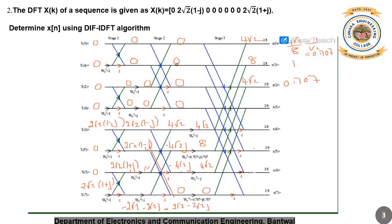Continuing Stage 3: 0 plus 0 gives 0. Then 0 and minus 4√2: minus 4√2 divided by 8 gives minus 0.707. Next, 0 and minus 8: minus 8 divided by 8 gives minus 1. Then 0 and minus 4√2: minus 4√2 divided by 8 gives minus 0.707. Finally, 0 and 0: 0 divided by 8 gives 0.